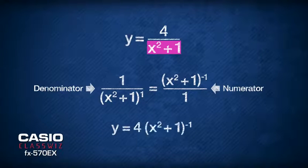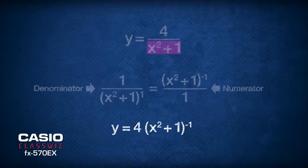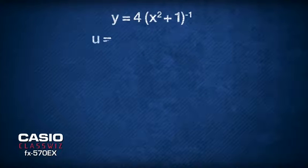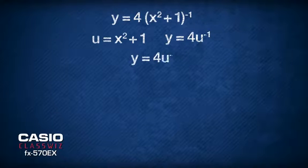To differentiate, we need to employ differentiation by substitution. First, we substitute x squared plus 1 as u, then we have y equals 4u to the power of negative 1.